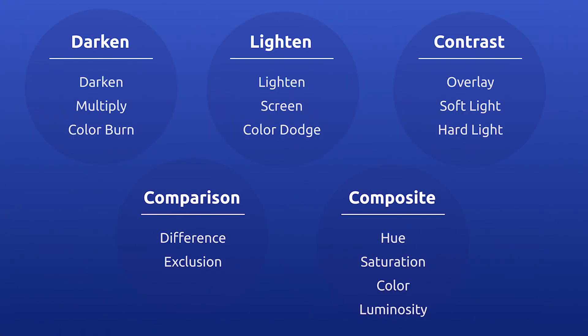The five modes are: darken, lighten, contrast, comparison, and composite. Those are just categories and each one does a different effect. If you're familiar with Photoshop or any other kind of image editing software, you're probably already familiar with these terms.